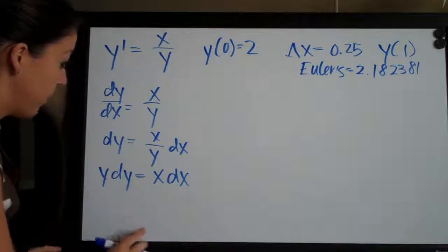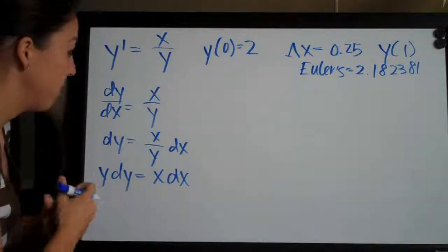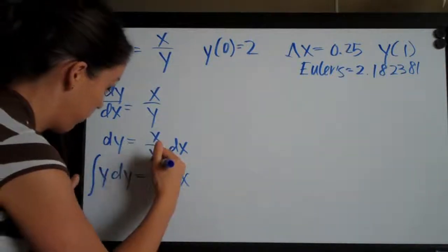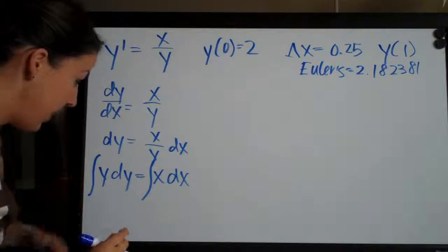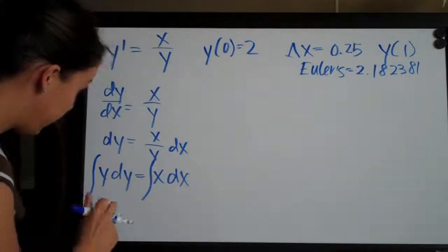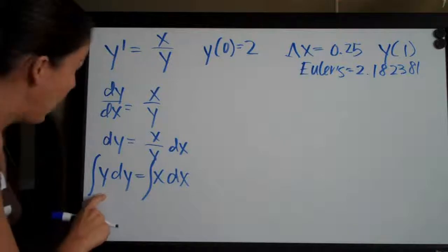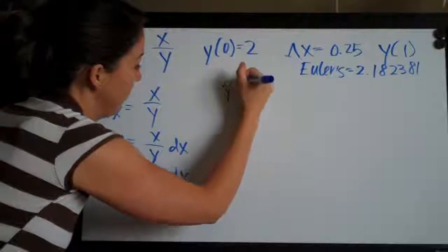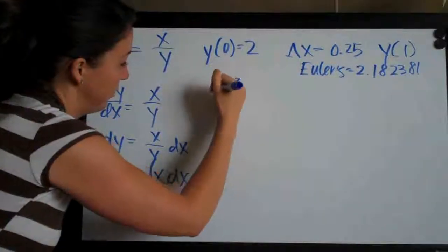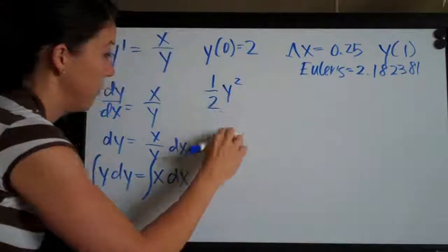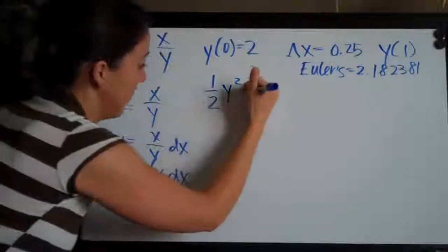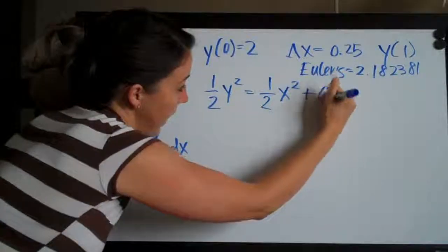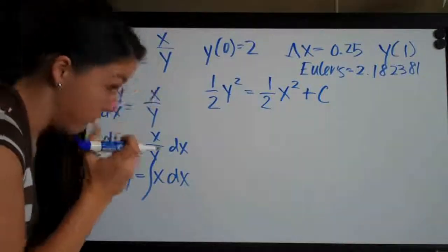So now that we've separated variables, we have y on the left and x is on the right. Step two is integrating both sides of the equation. Now integrating, we will use the power rule. We'll add one to the exponent and we'll get y squared and then divide the coefficient, which is one, by the new exponent, which is two. So we get one half y squared equals one half x squared and then we're going to add c to the right side of the equation.